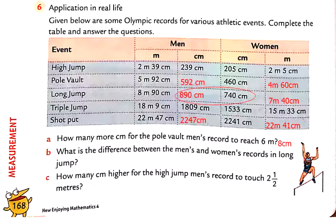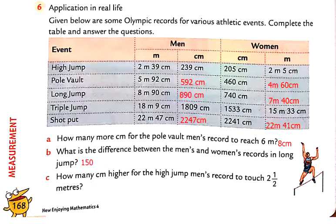890 minus 740 equals 150 centimeters. So the difference between the men's and women's long jump records is 150 centimeters.